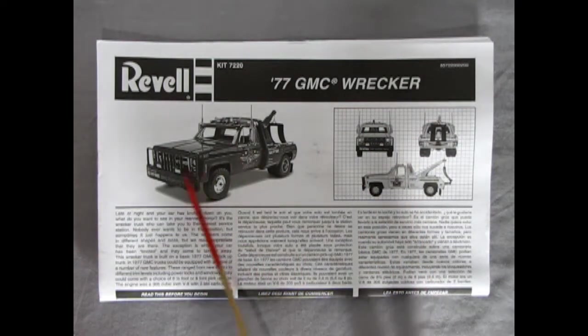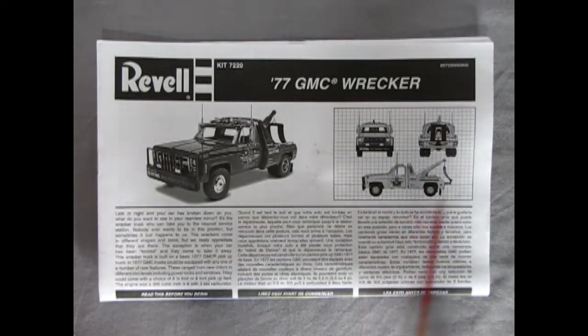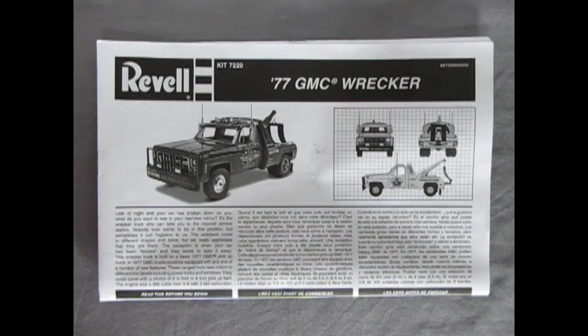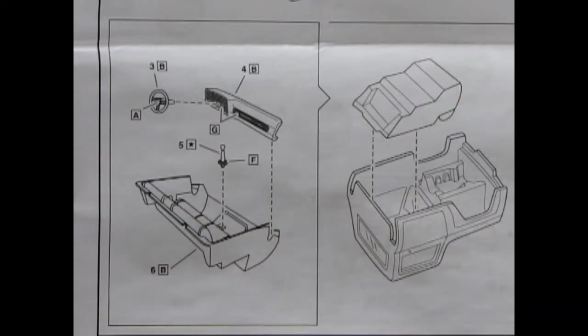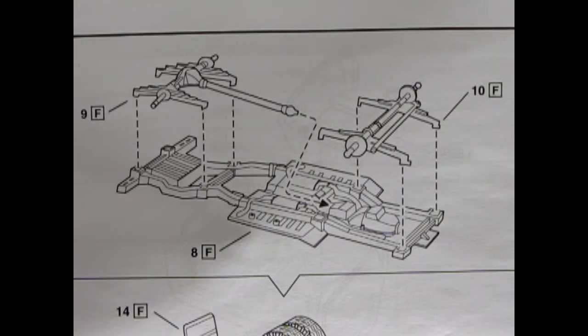Here we have our instruction sheet. We've got the nice buildup of the model in black and white, as well as the front, rear, and side view blueprint style. Step one shows our cab getting the inside painted with some semi-gloss black and then our glass going in the top. The next two panels show the interior bucket with the center gear shift, a dashboard, and a steering wheel with column being glued together and painted.